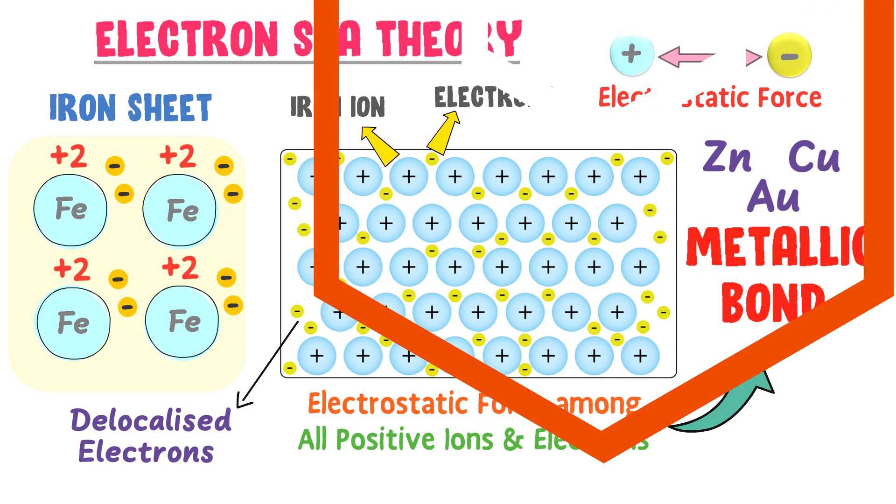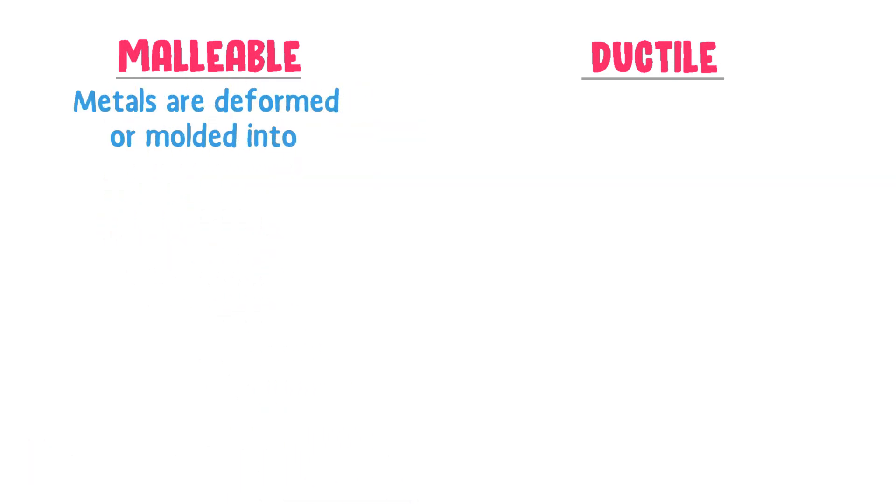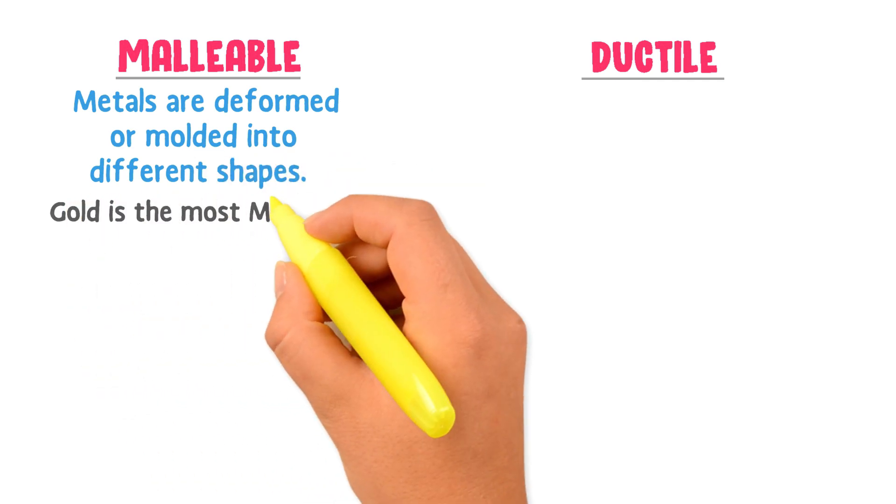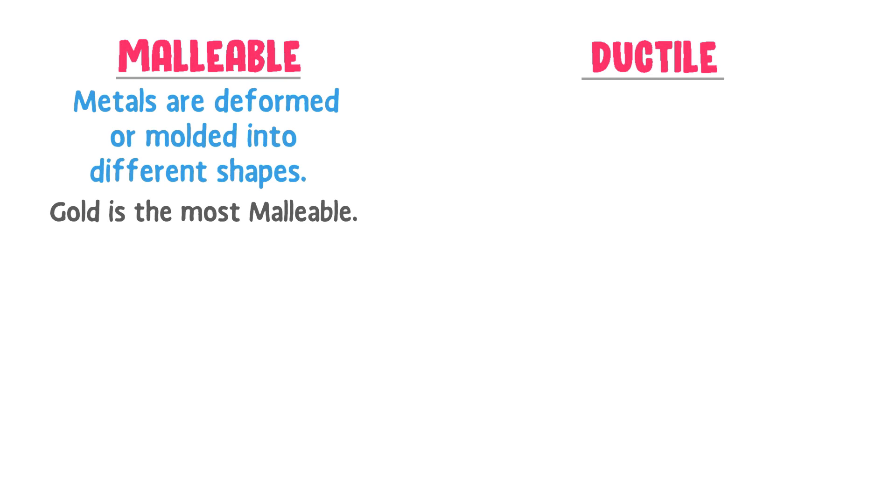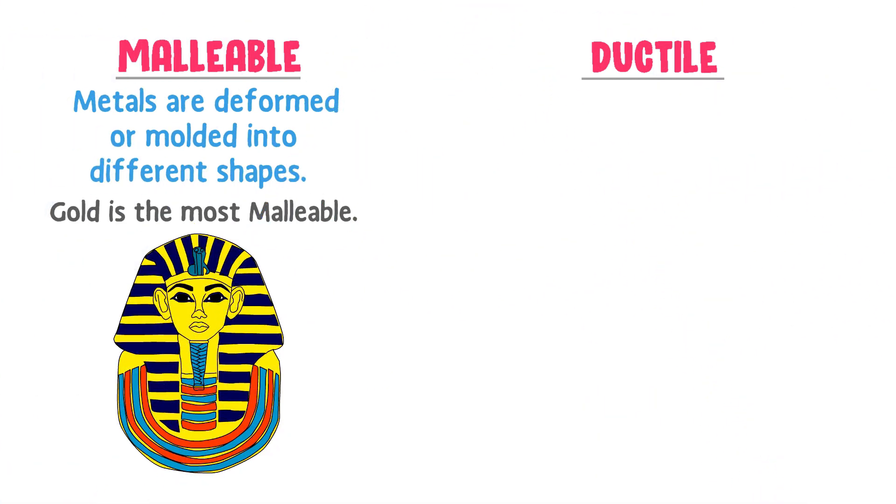Finally, let me teach you why metals are called malleable and ductile. Well, malleability of metal means that they can be deformed or molded into different shapes. For example, gold is the most malleable metal. It can be transformed into different jewelries. This property of metal is called malleability.